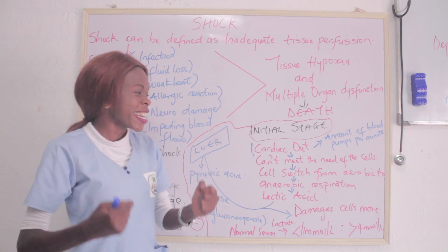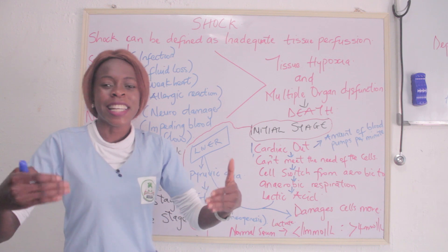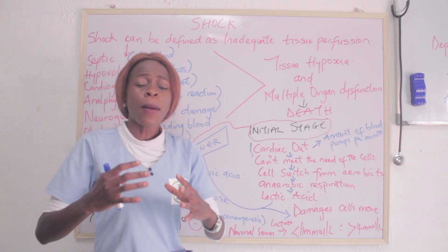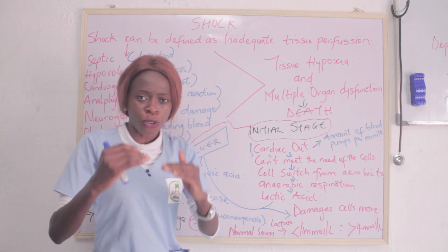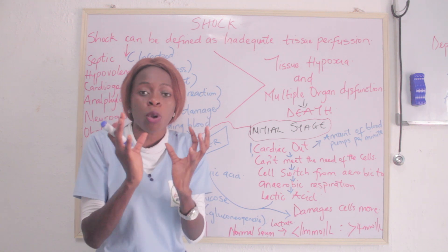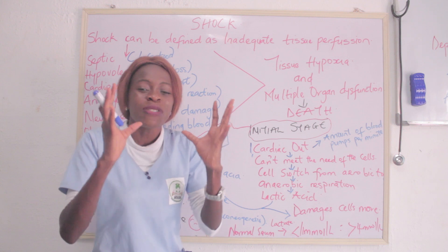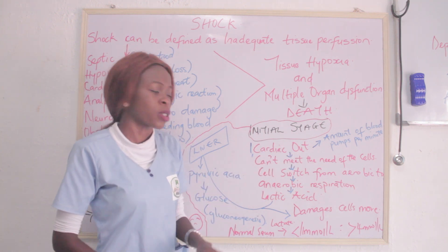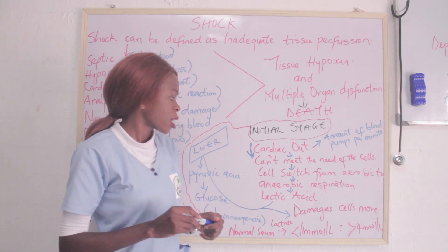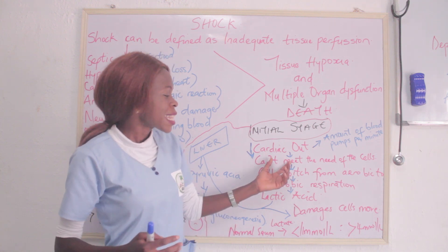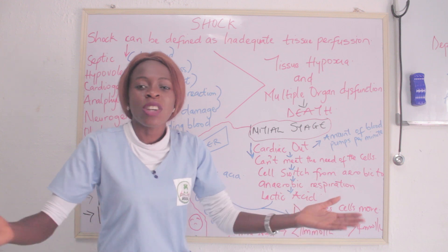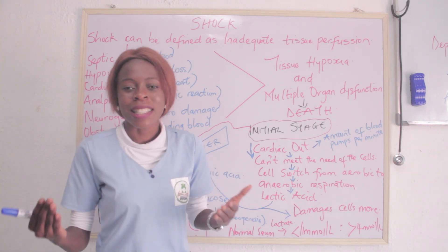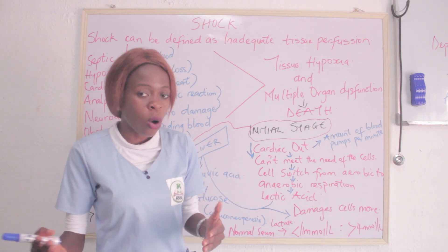The first is the initial stage of shock. What is really happening in the initial stage? Using hypovolemic shock as an example: there is decreased fluid volume and decreased blood flow. The heart will not have enough blood to pump into circulation, so there will be decreased cardiac output. When there is decreased cardiac output, it cannot meet the needs of the cells — the cells will not be getting enough oxygen or nutrients. The cells will try to see other alternatives.